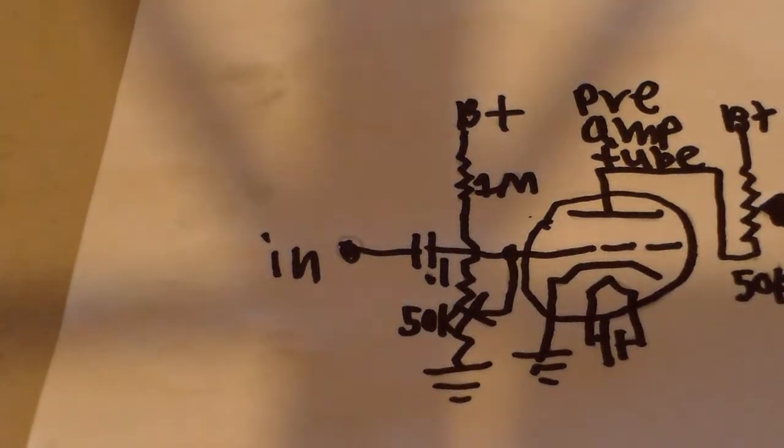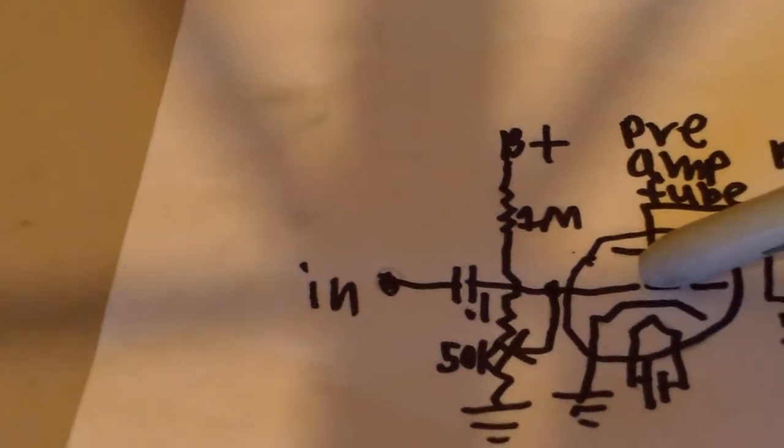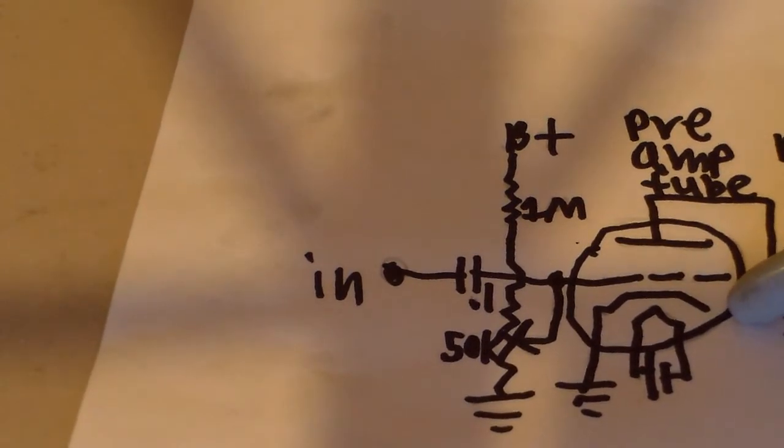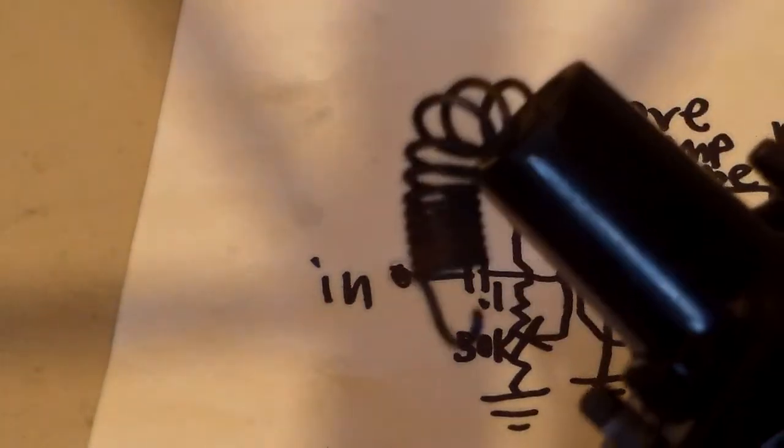And you need that because this tube, I'm pretty sure any vacuum tube is a high voltage low current source. But a speaker requires high current, low voltage source. So, what this transformer does is it takes that high potential 300 volts and the plate is connected to right here.